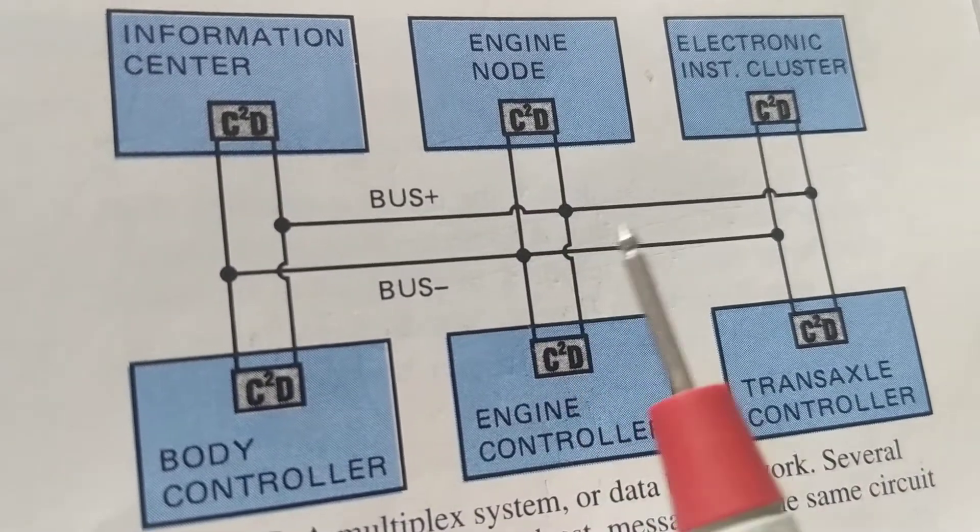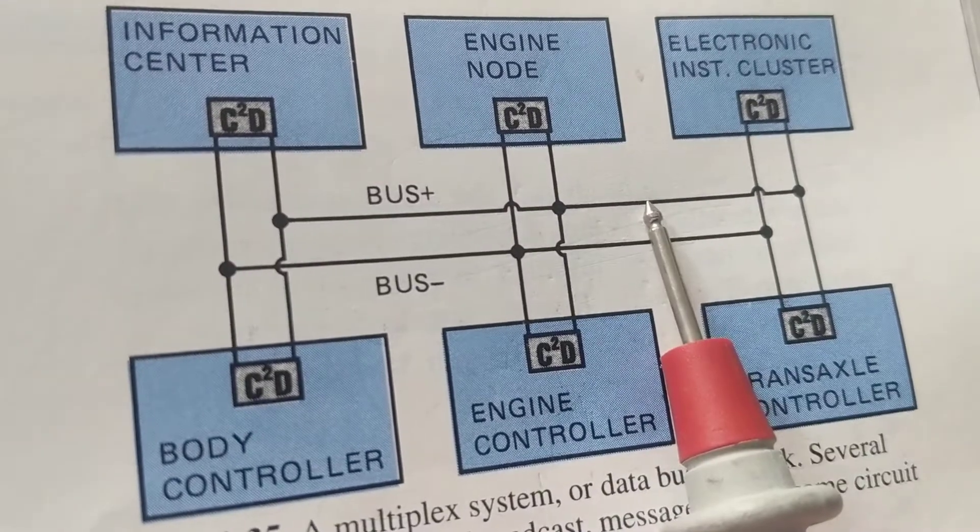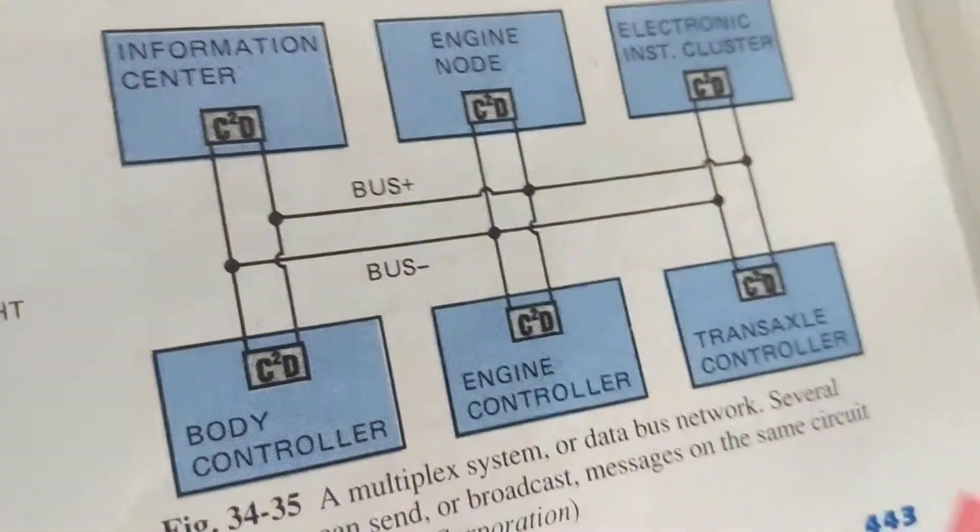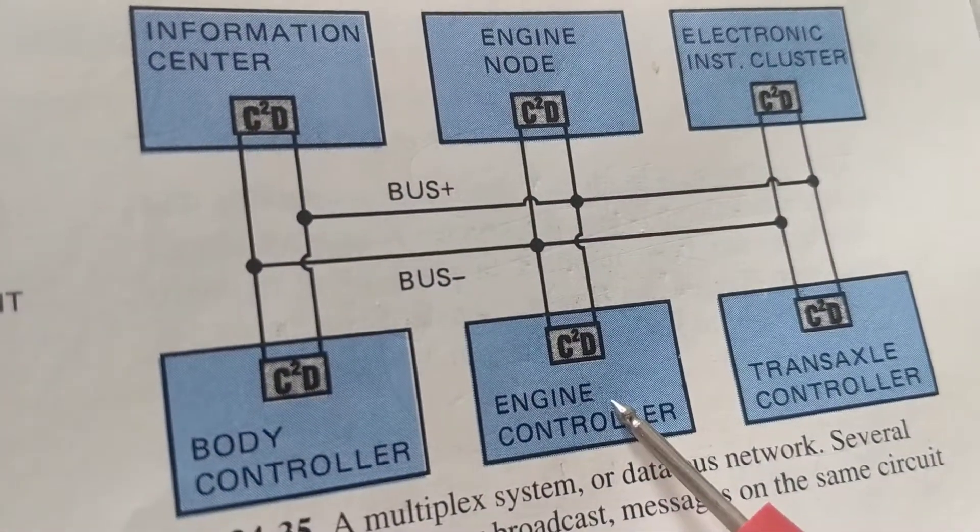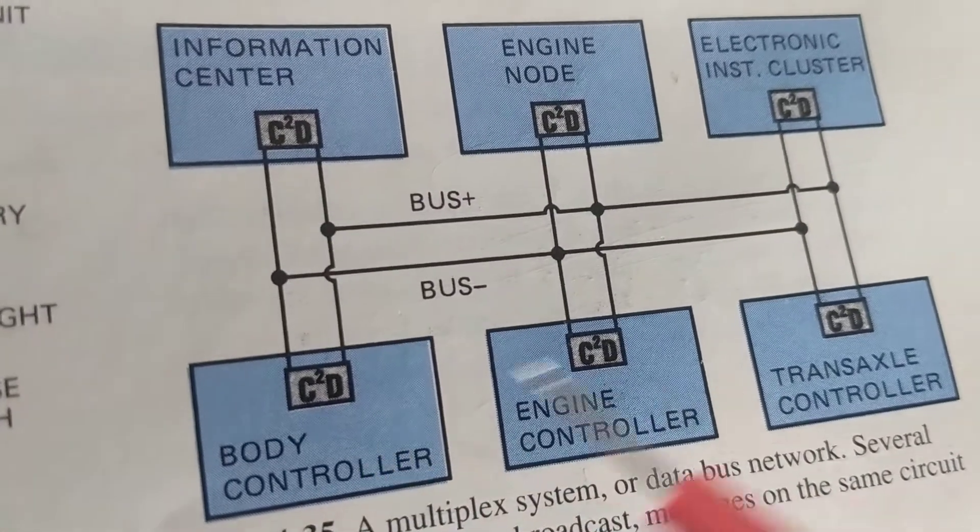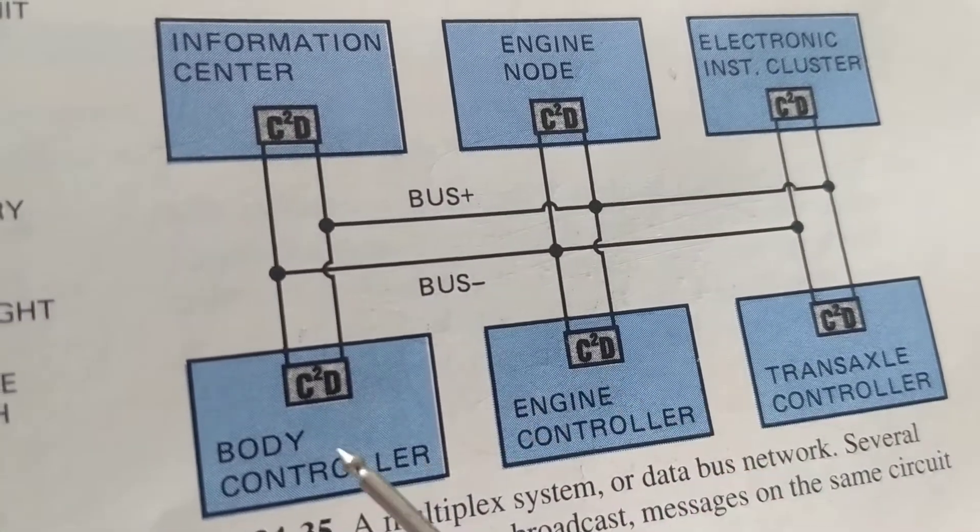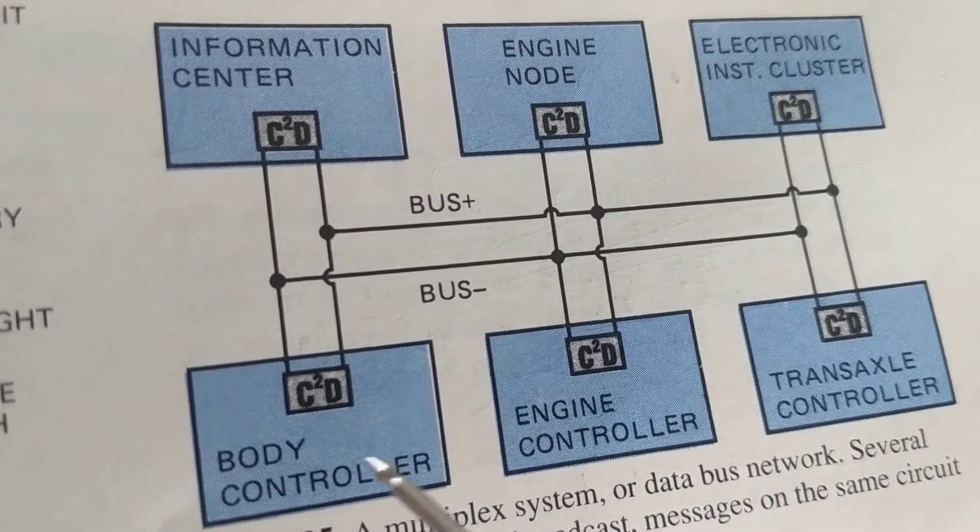But once something goes bad, you have to know the priority. Like we said, engine control module, body control module, radio module, the air conditioning module. Guess what? If it stopped, it's not such a great priority. You can still go without the radio. Obviously, the BCM module, it has to speak to the PCM module.